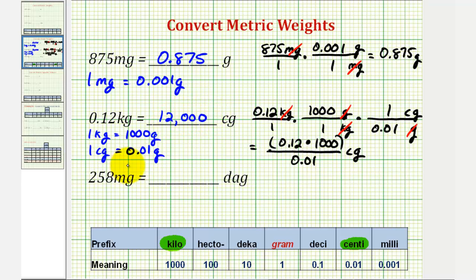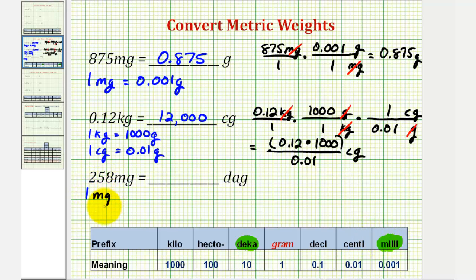For the last example, we're going to convert 258 milligrams to decagrams. We're converting from milligrams to decagrams, and again the conversion does not directly involve grams, which means we'll need two unit fractions. Starting with milligrams: one milligram is equal to one thousandth of a gram, and one decagram is equal to ten grams.